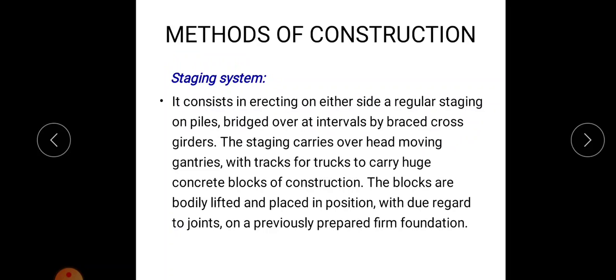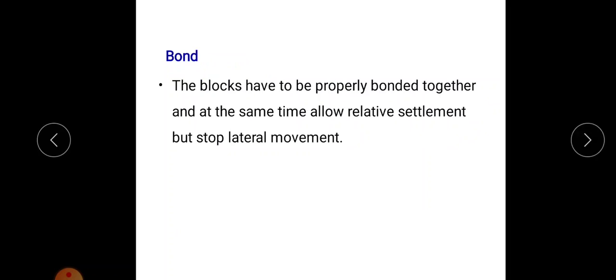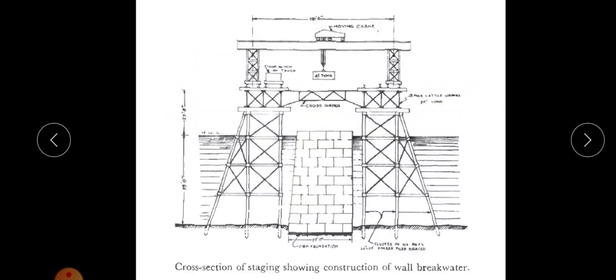Next is the methods of construction. The first method is the staging system. It consists of erecting on either side a regular staging on piles, bridged over at intervals by braced cross girders. The staging carries overhead moving gantries with tracks for trucks to carry huge concentrated blocks of construction. The blocks are bodily lifted and placed in position with due regard to joints on a previously prepared firm foundation. The blocks must be properly bonded together to allow relative settlement but stop lateral movements.